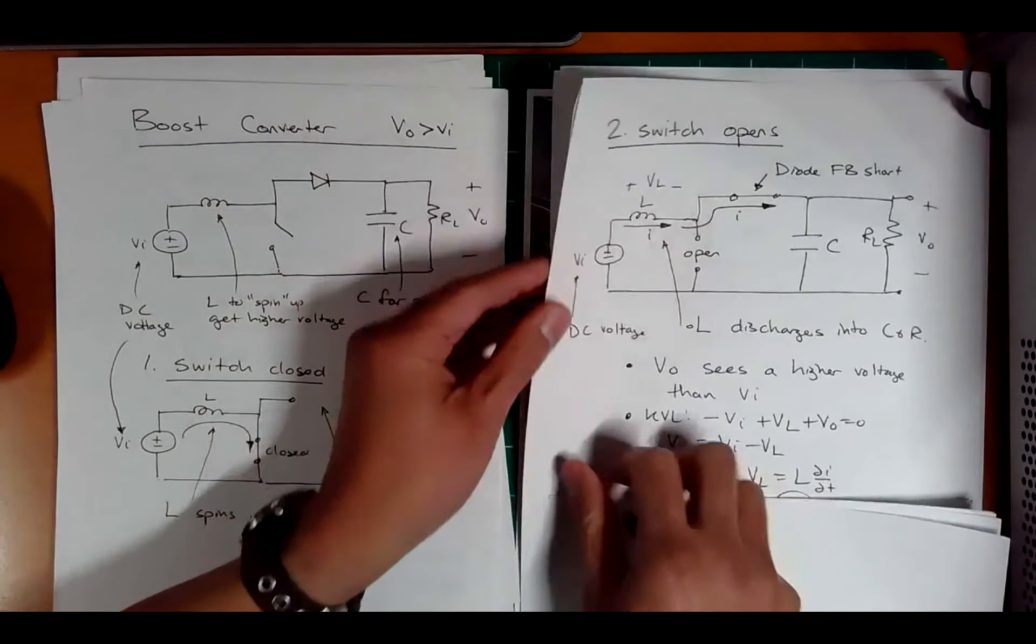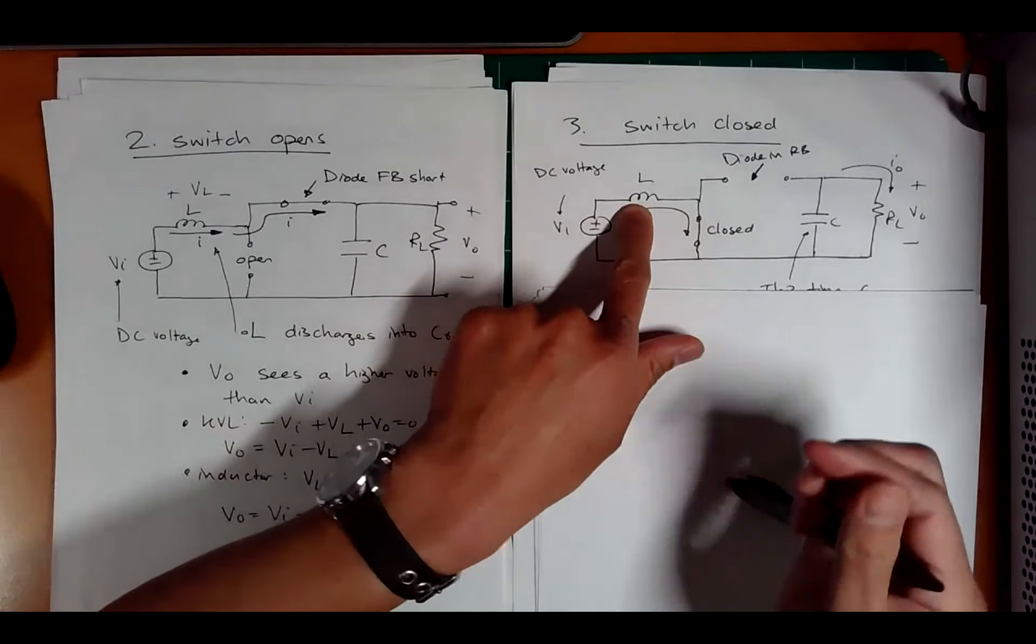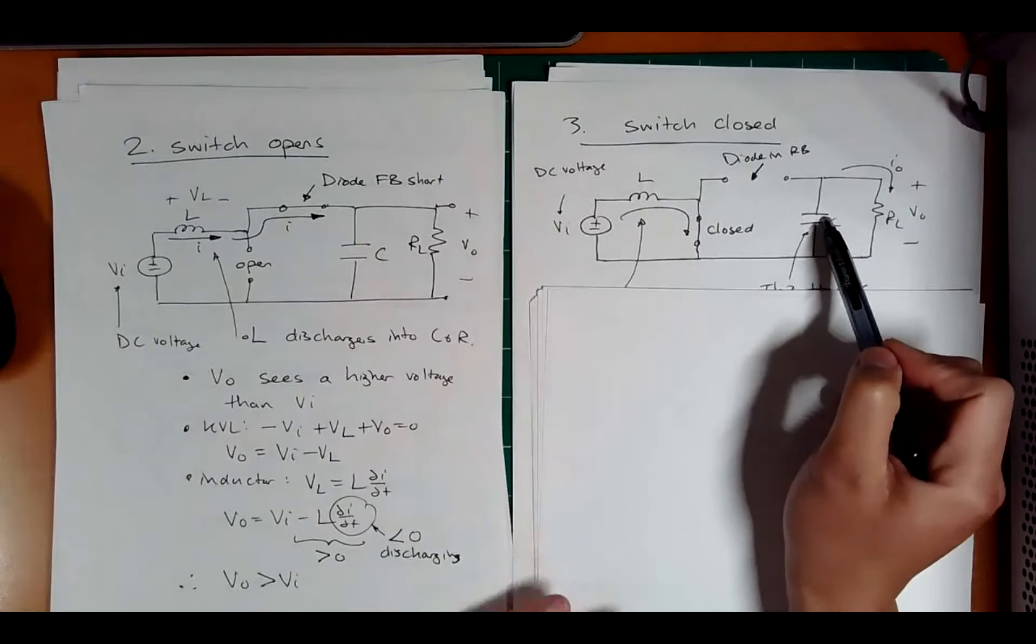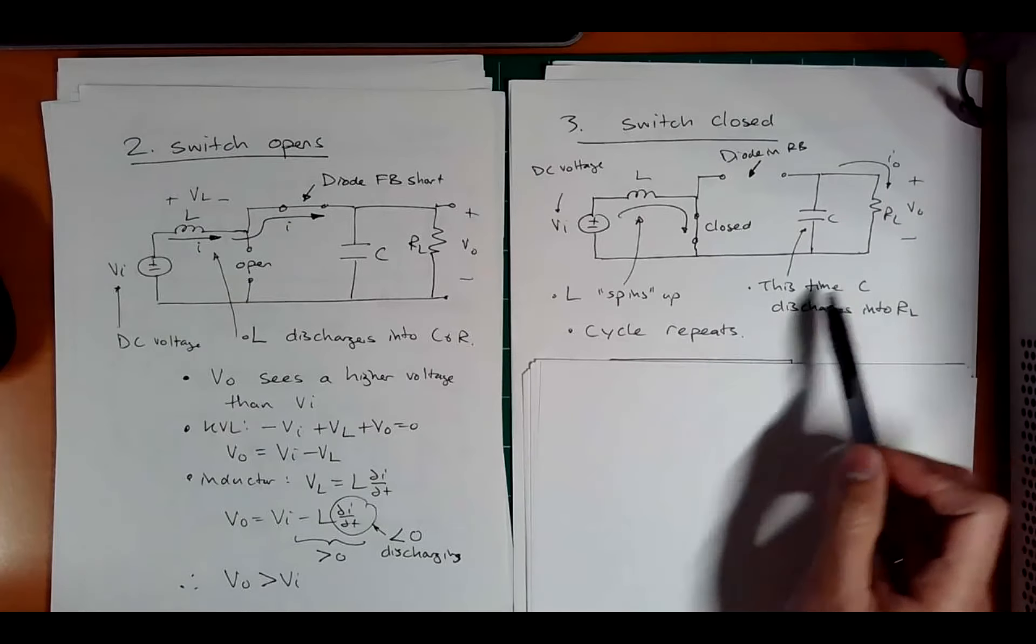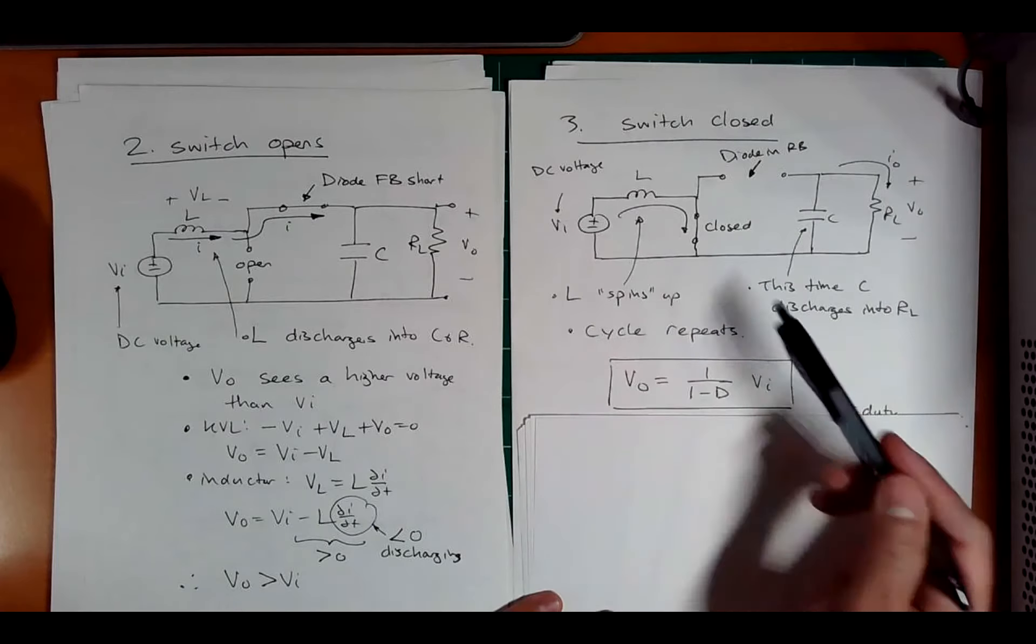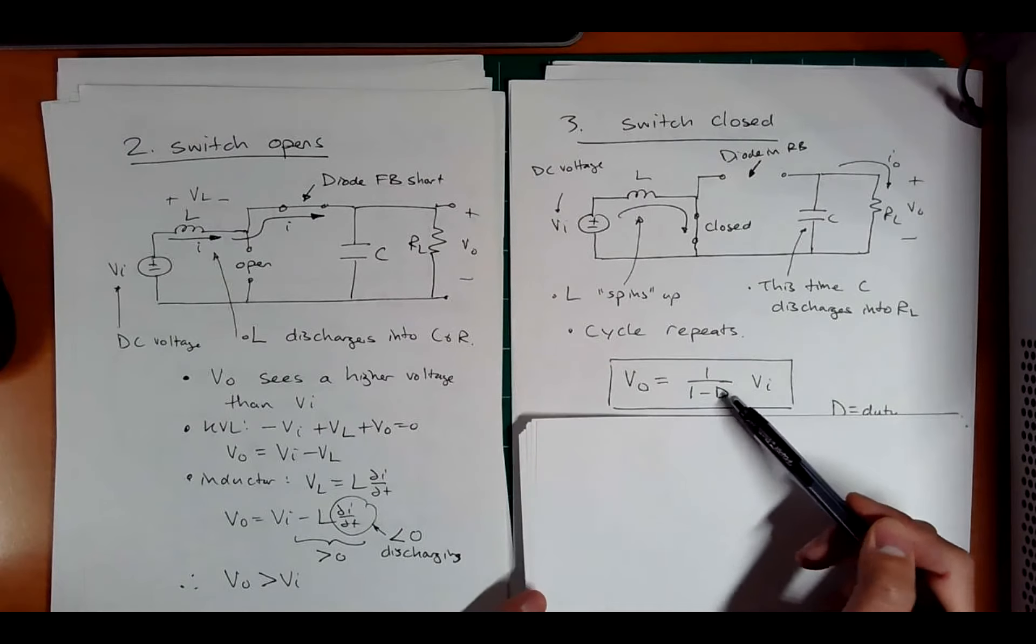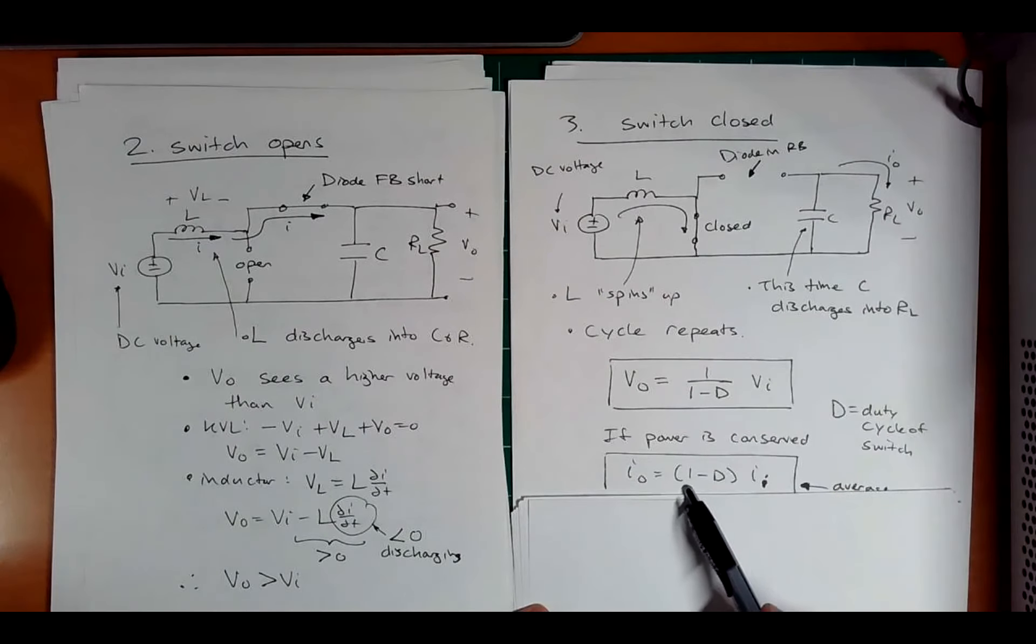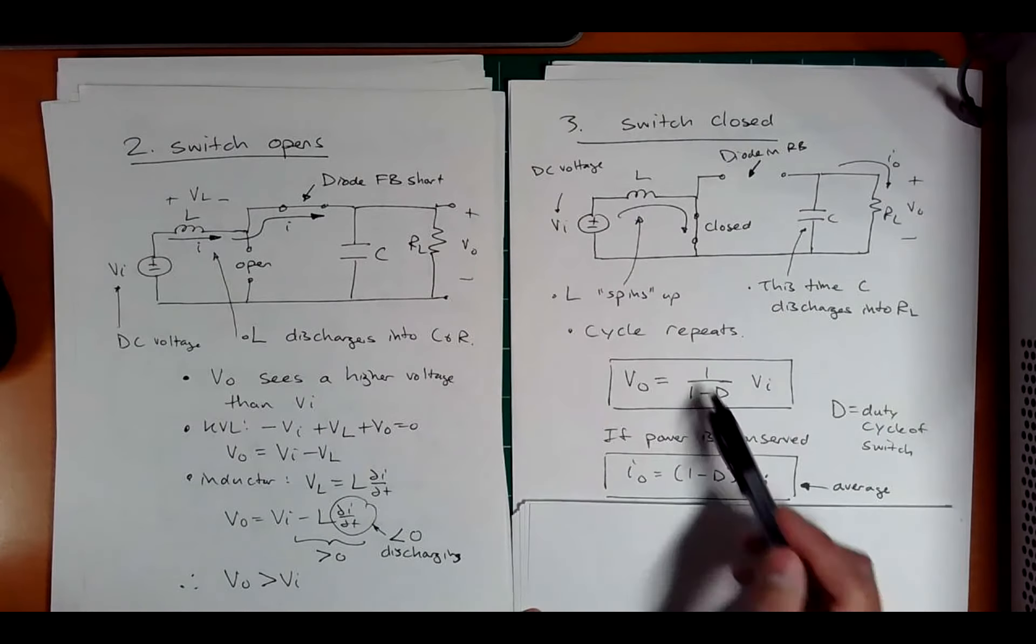So you're doing this charge up, pew, charge up, pew. Now, if I close it again, what happens? If I close that switch again, now this is going to charge back up. The diode's going to go back into reverse bias. Now the capacitor, since this was charged up, is going to be the one that provides energy to the resistor. And the cycle repeats. And the relationship between the output to the input is not a one over D, as you would expect. It's one over one minus the duty cycle. Hmm, interesting. And what about if power is conserved? Well, the output current is going to be one minus D. Notice the inverse relationship. And again, II, the current going here is going to be average because it's choppy.